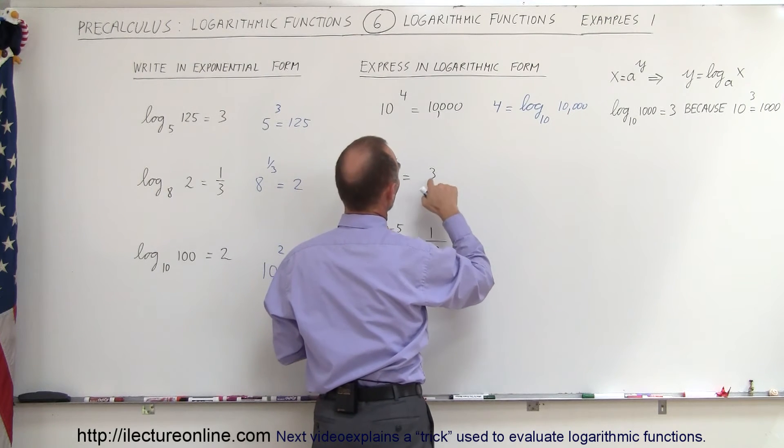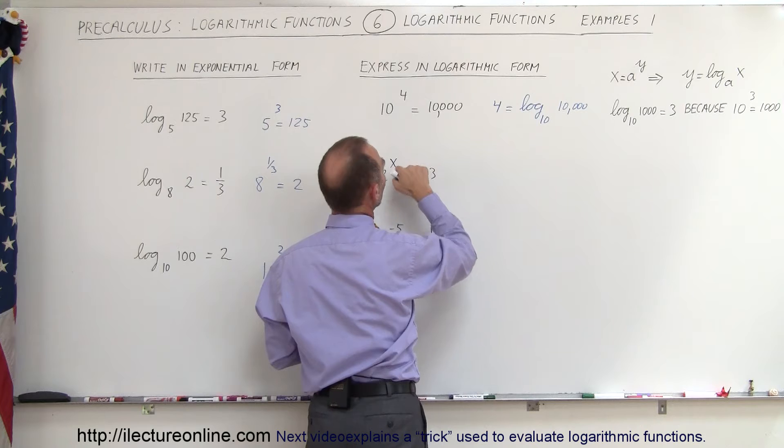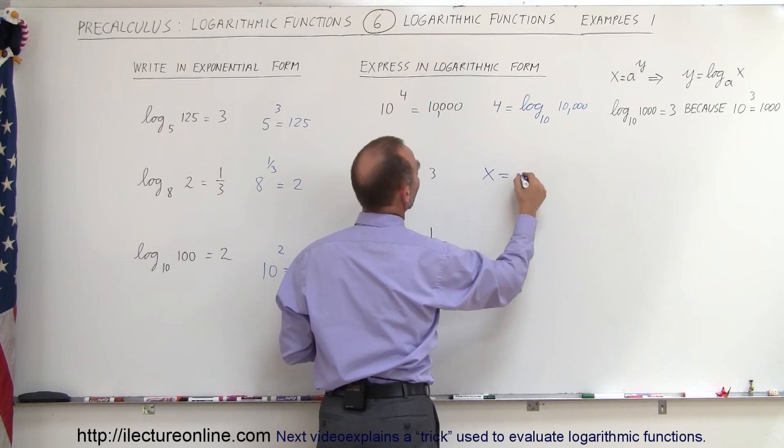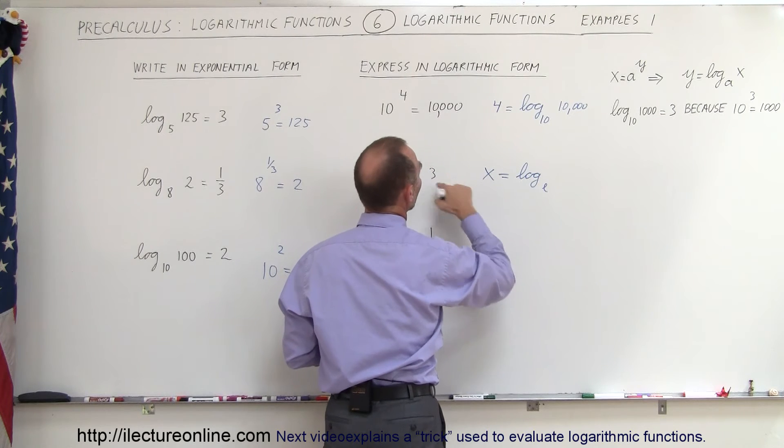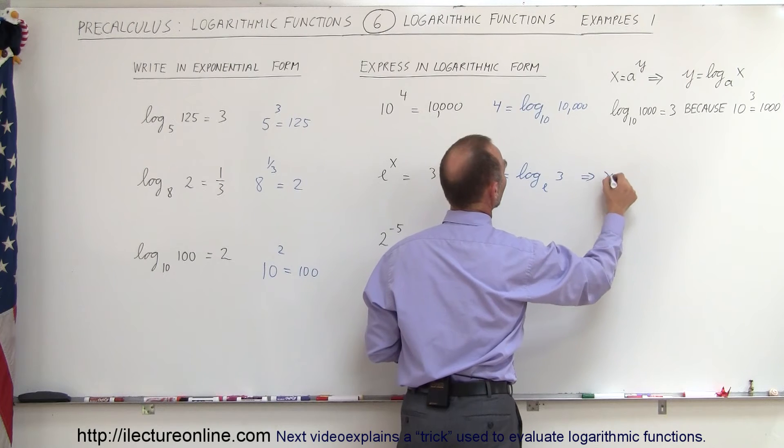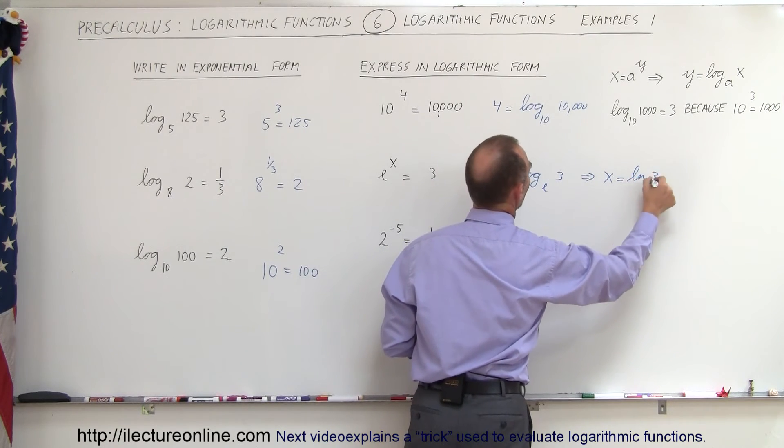Here we have the exponent that becomes x equals log to the base e of the number 3, and of course that can be written as x equals the natural log of 3.